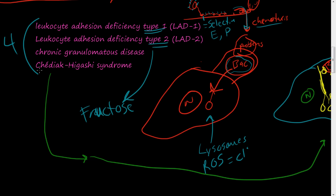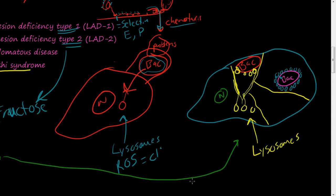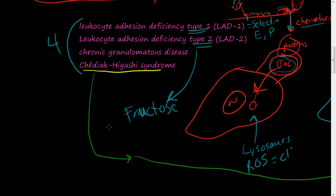In the case of Chediak-Higashi syndrome, these lysosomes cannot travel along the cytoskeleton tracks to reach the bacteria and destroy whatever was phagocytized. That is Chediak-Higashi syndrome.